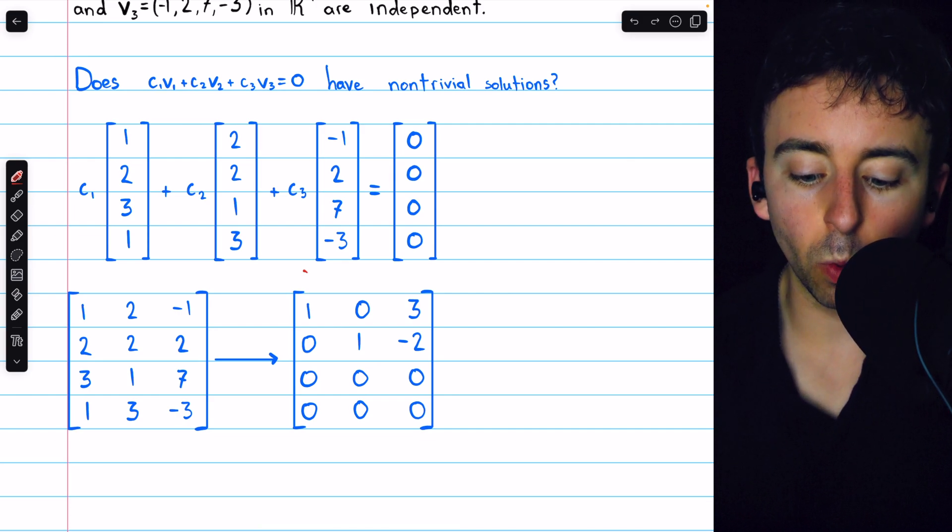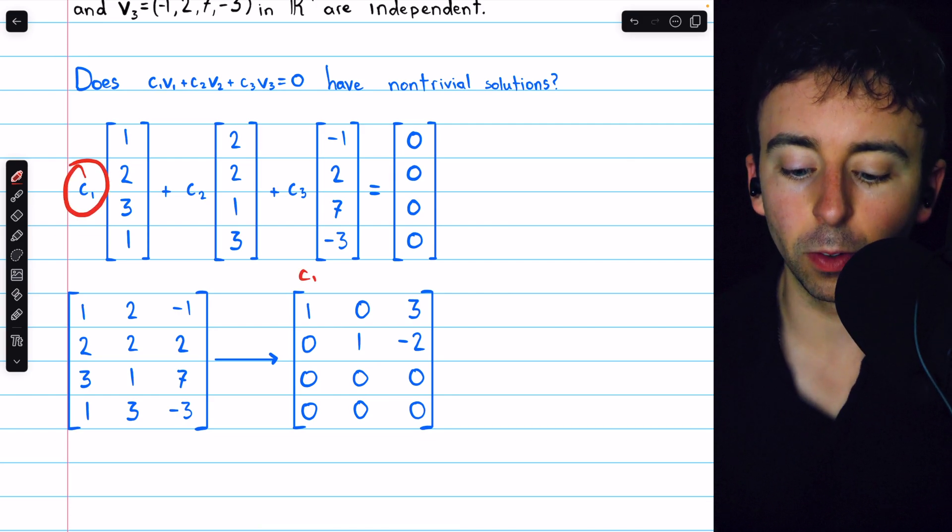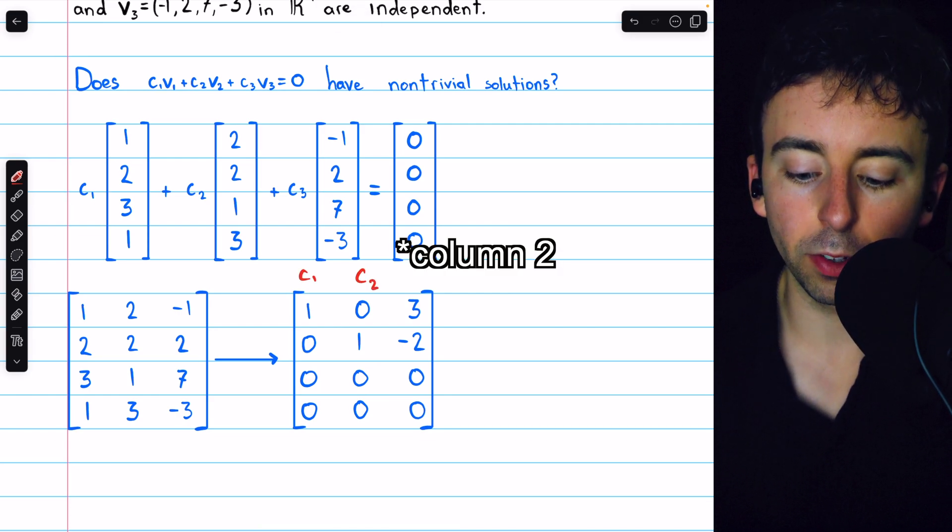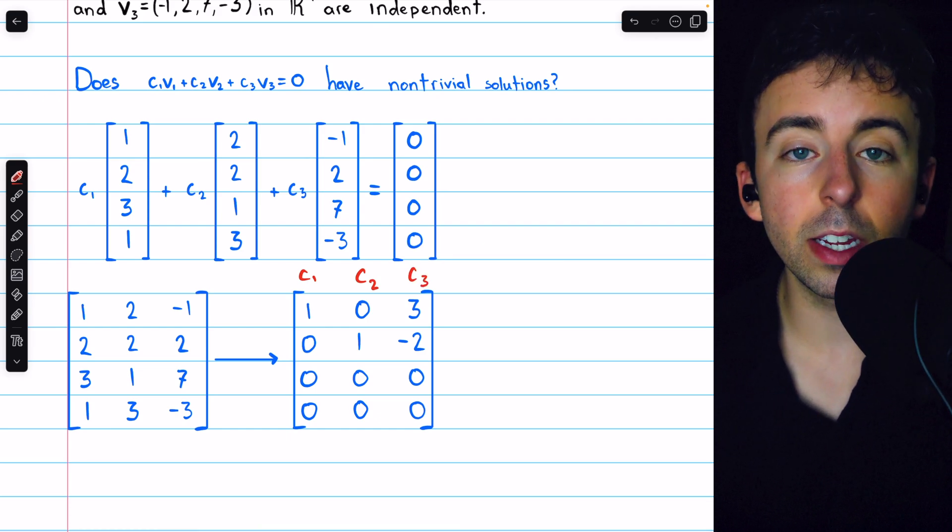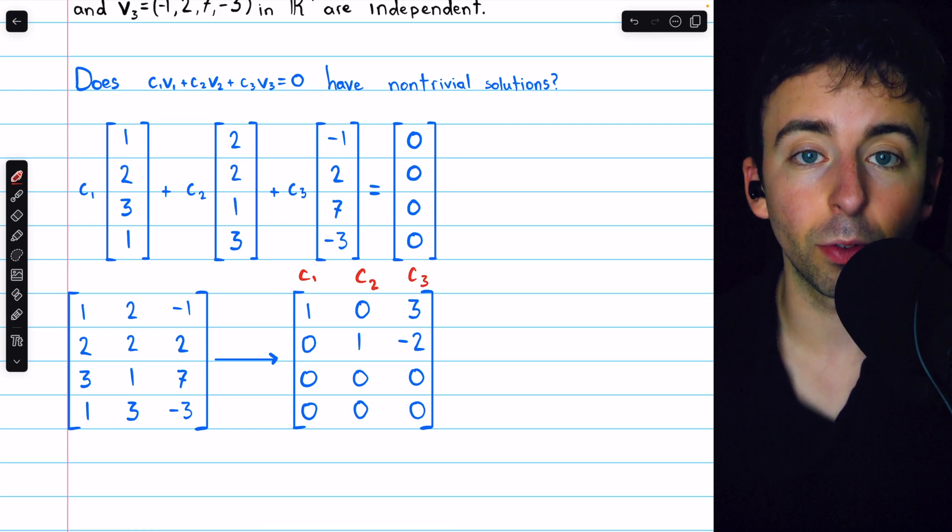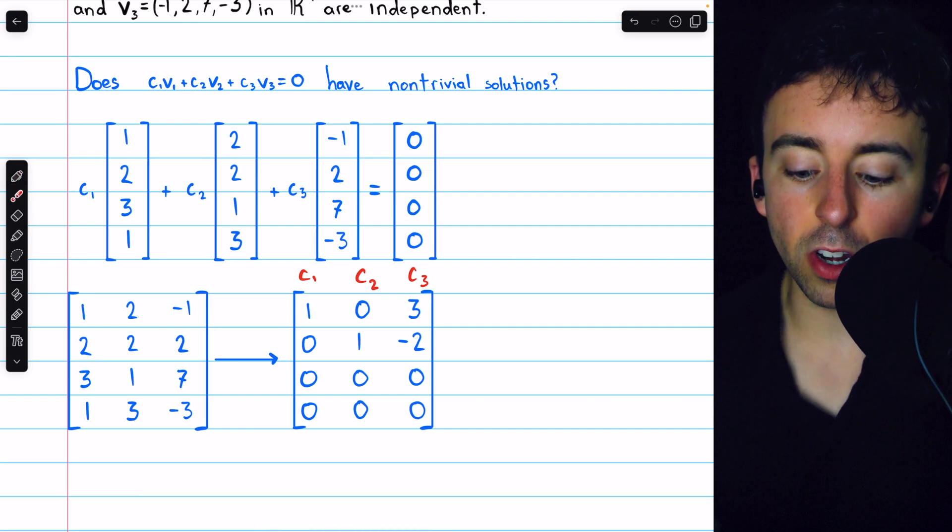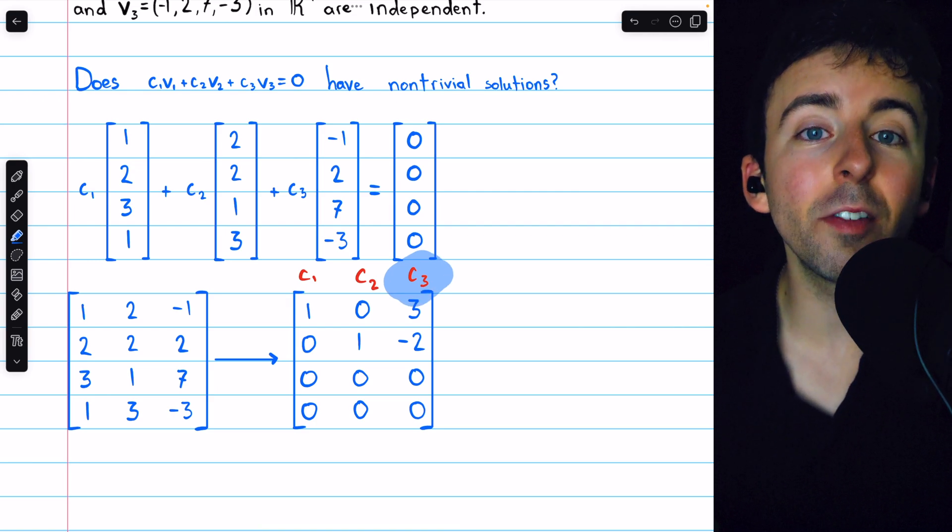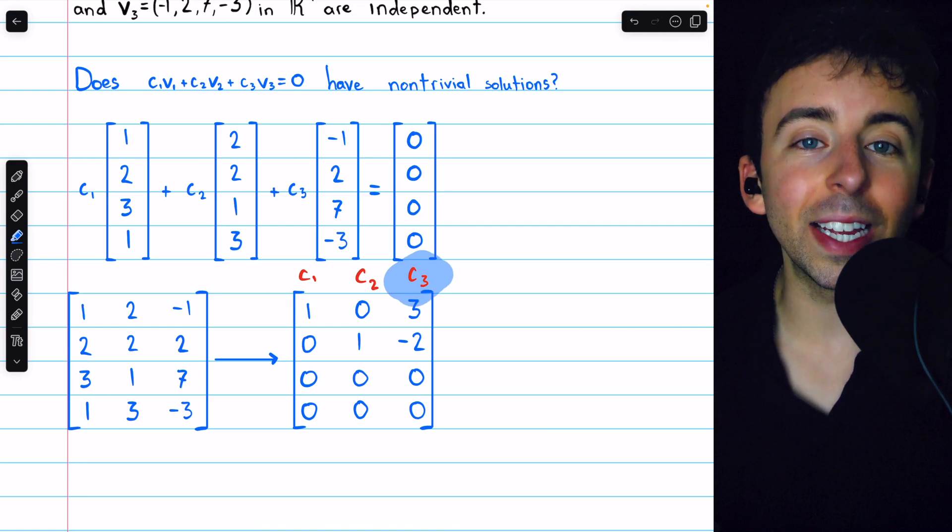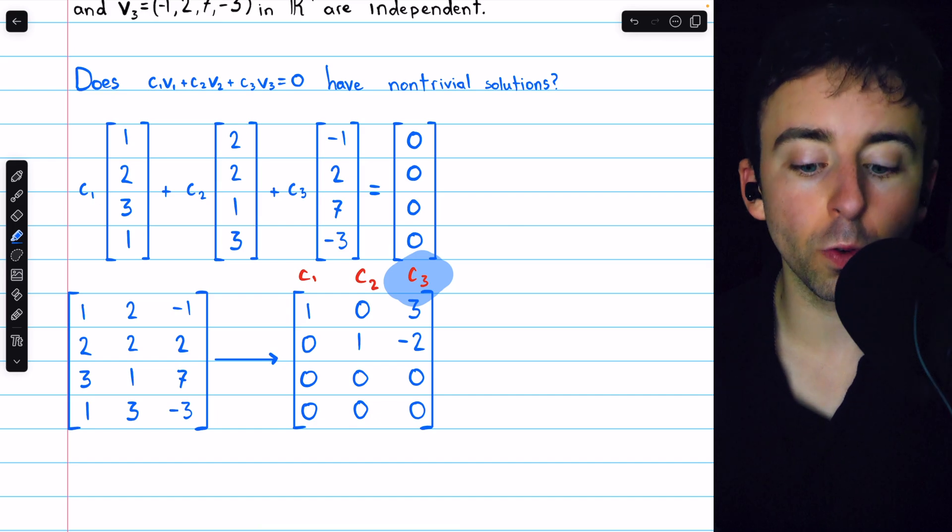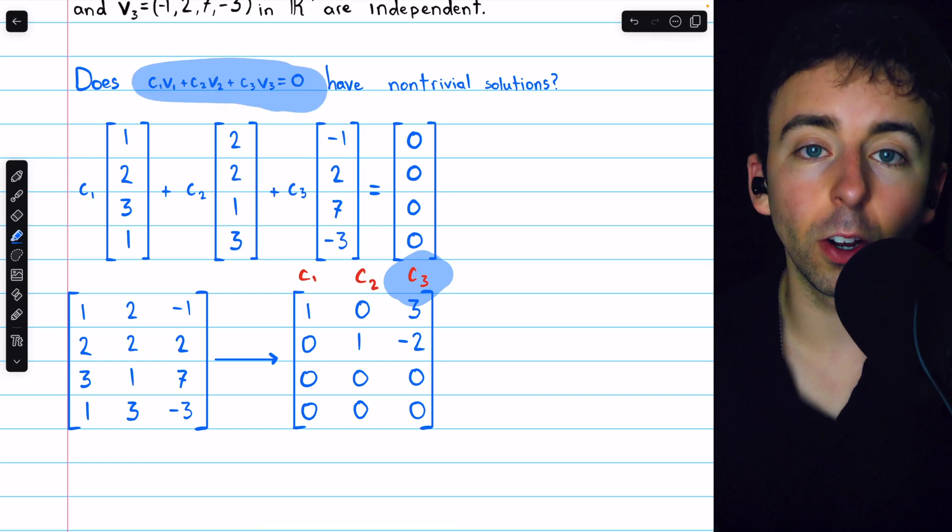Recall that column 1 corresponds to that scalar C1, column 2 corresponds to the scalar C2, and column 3 corresponds to the scalar C3. Then we see that there is no leading entry in the third column, and this means that scalar C3 is a free variable, and so indeed there are non-trivial solutions to this equation.